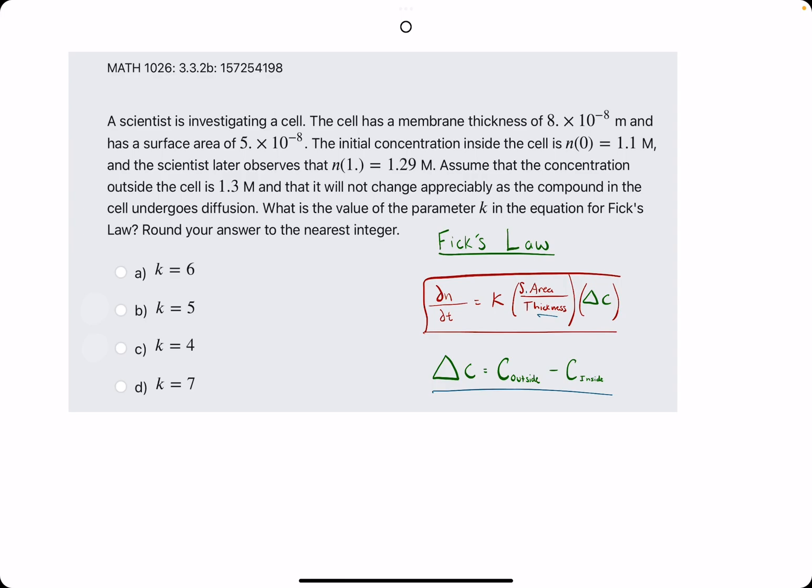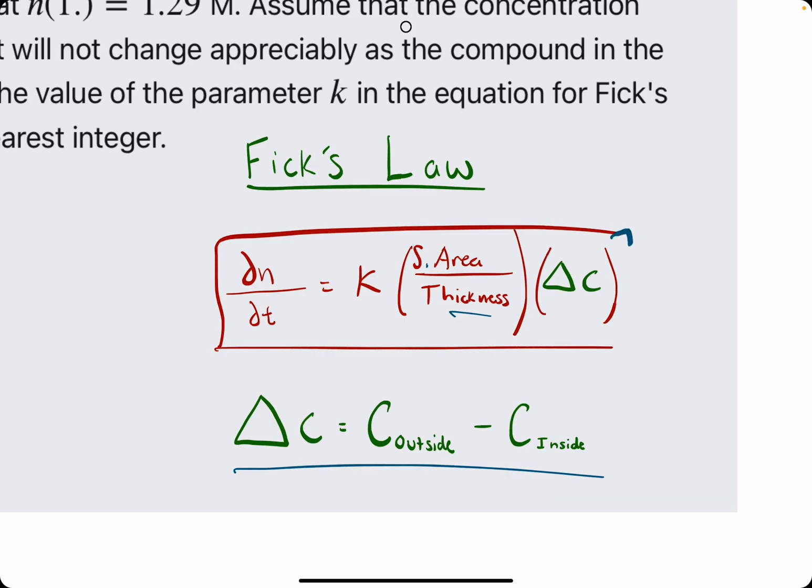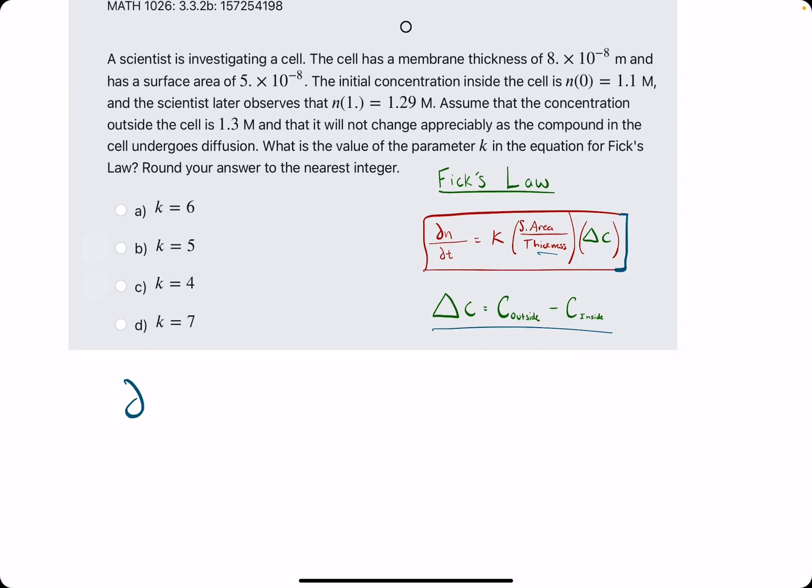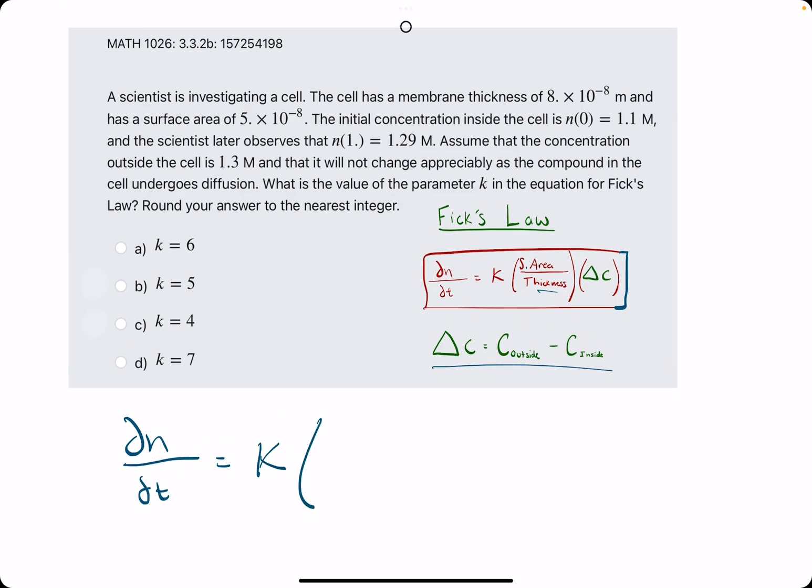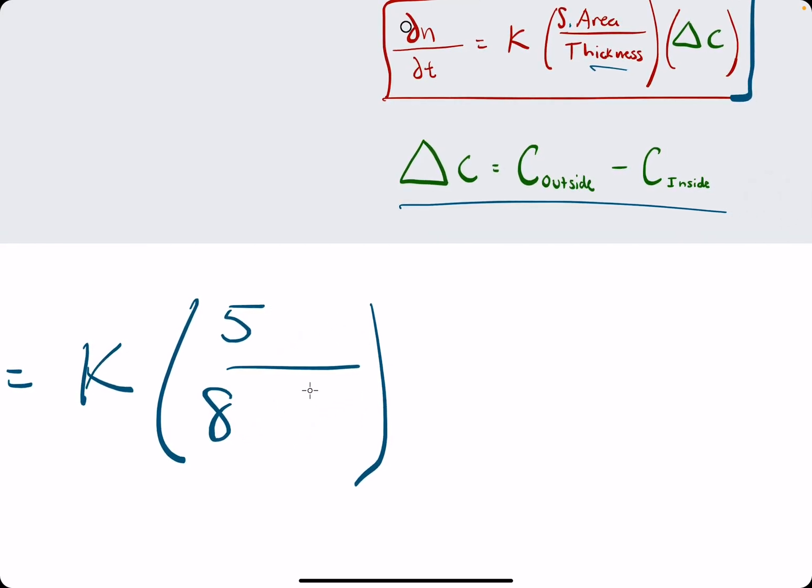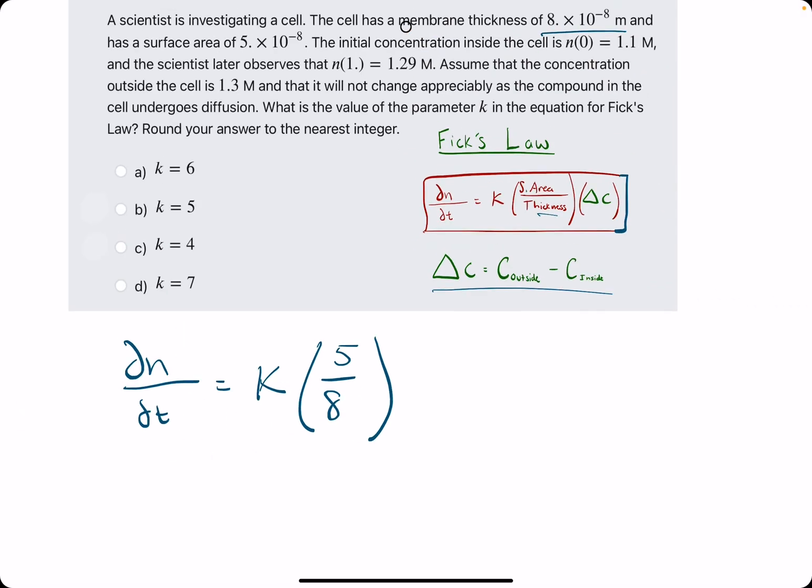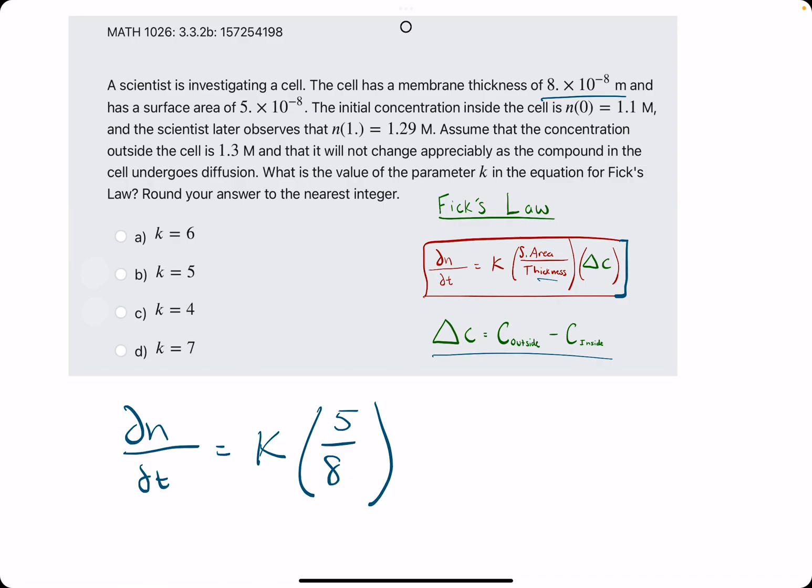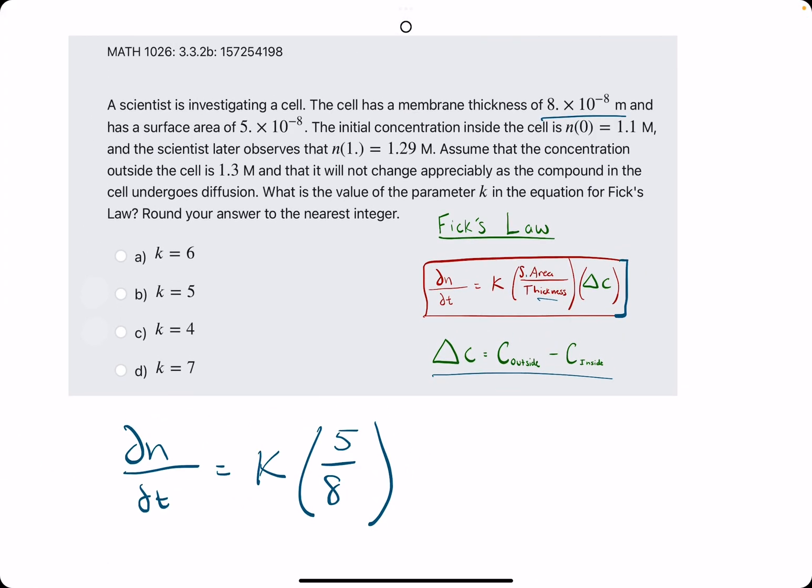Alright, so jumping right into it, we want to set up this differential equation. That is dn over dt equals all this stuff here. So, let's waste no time. We have dn over dt equals k, which we are eventually solving for. Surface area, which is the 5, technically times 10 to the negative 8. And then the thickness they give us is the 8 times 10 to the negative 8. Because they're both raised to times 10 to the negative 8, we can cancel those out giving us just 5 eighths, which is very convenient.